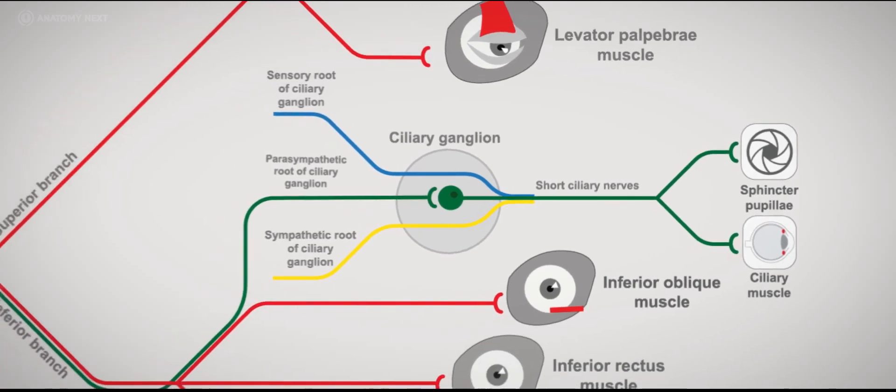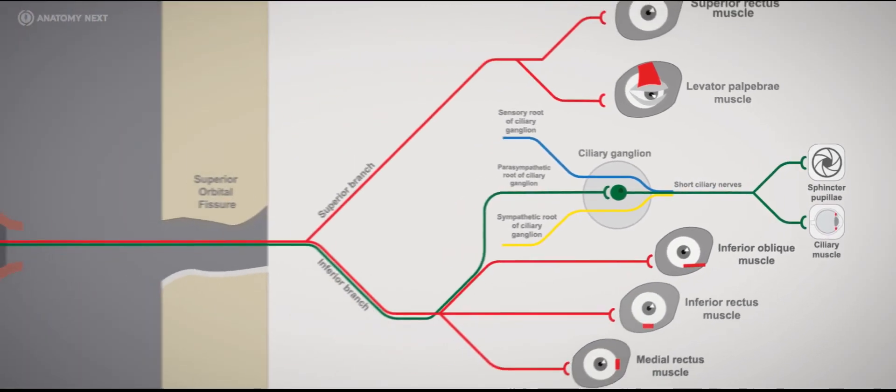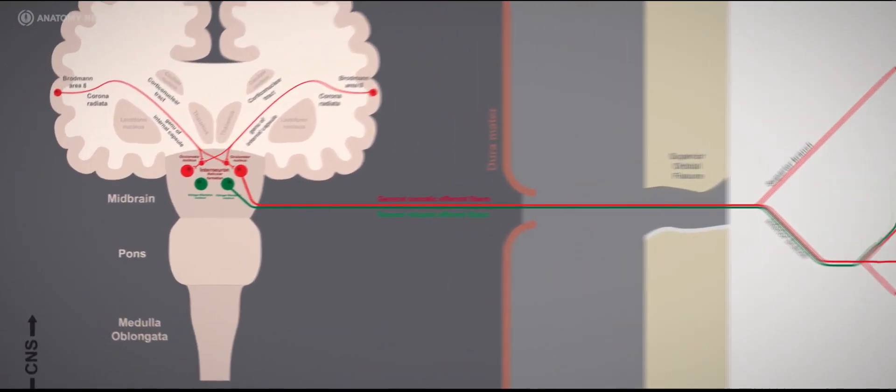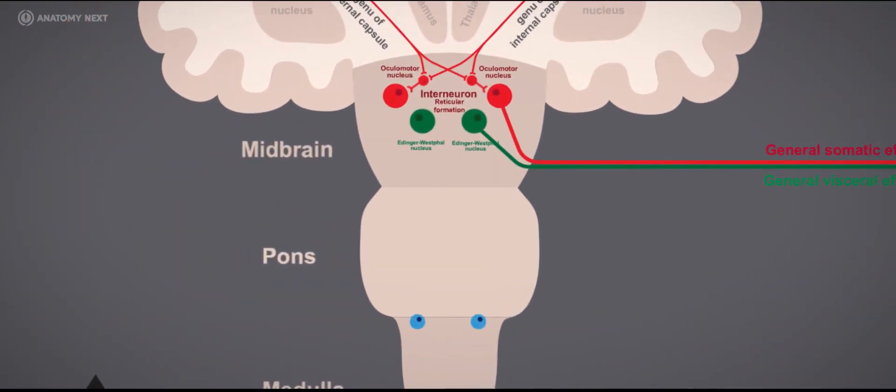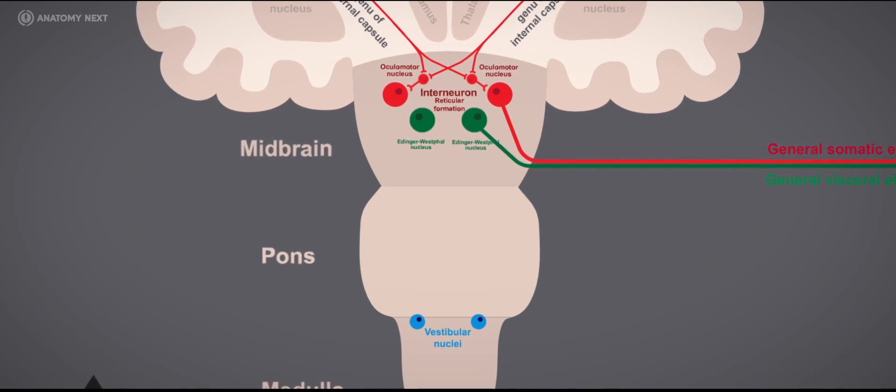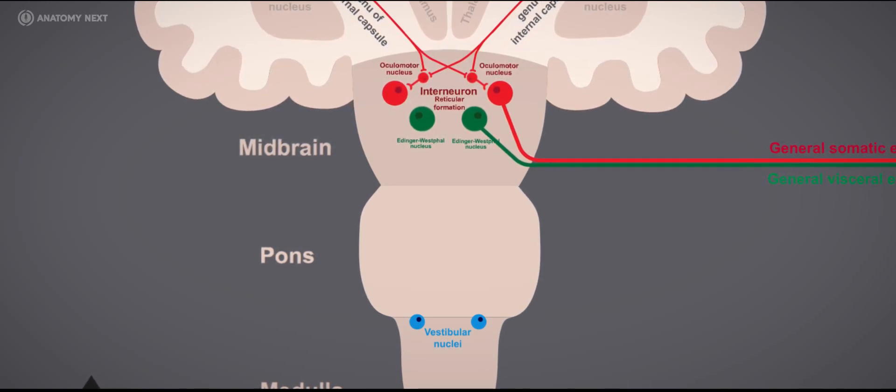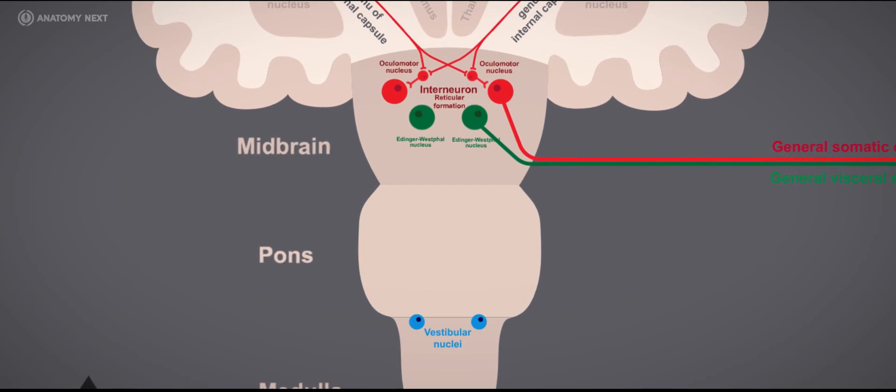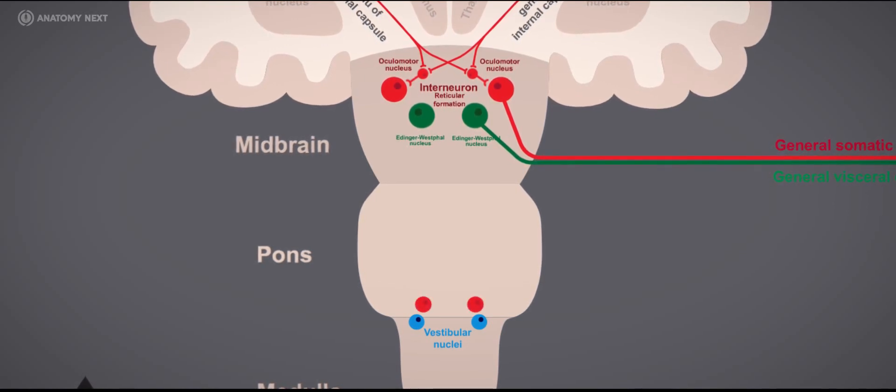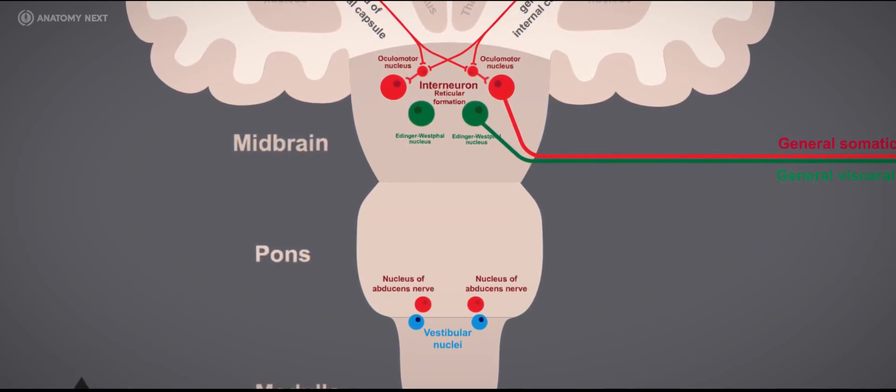Note that the oculomotor nuclei are also interconnected with other cranial nerve nuclei in the brainstem. Some neurons of the vestibular nuclei belonging to the vestibulocochlear nerve project fibers to the neurons of oculomotor nuclei, as well as neurons of the abducens nerve nucleus and trochlear nucleus.